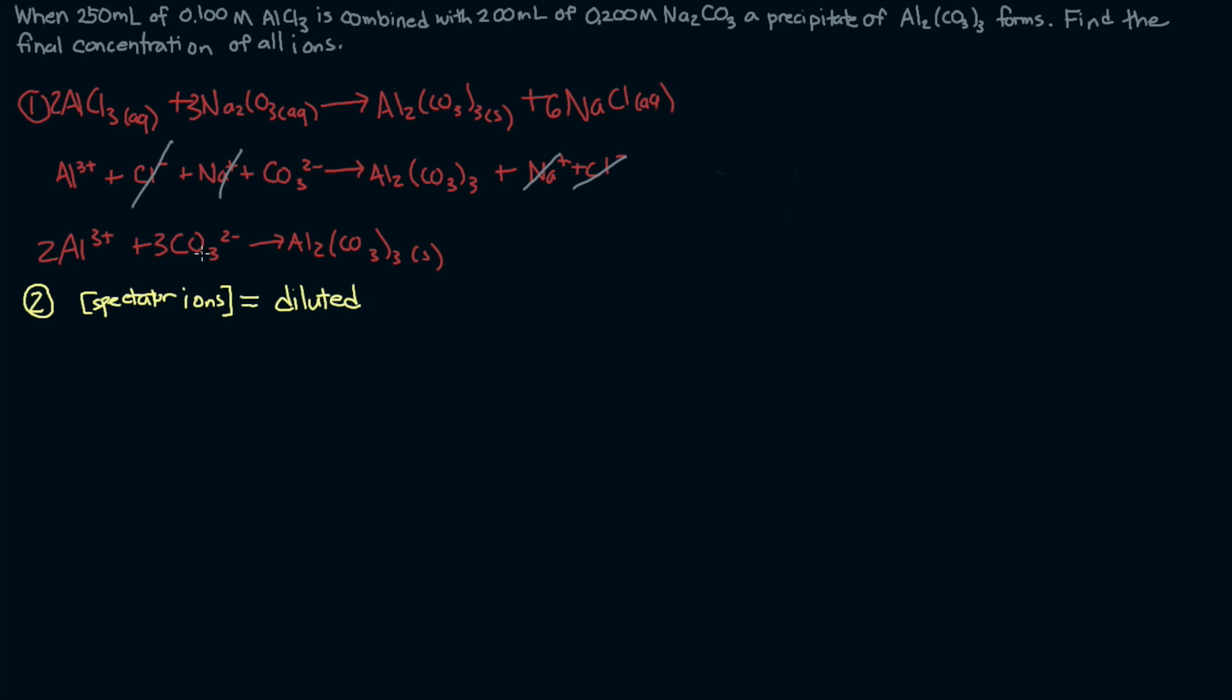Next, for the aluminum and the carbonate, the participating ions, those are a little trickier. First, we need to determine which one is the limiting reactant. And then when we find that, we will immediately know that that concentration is zero molar because it was used up in the reaction to create the precipitate.